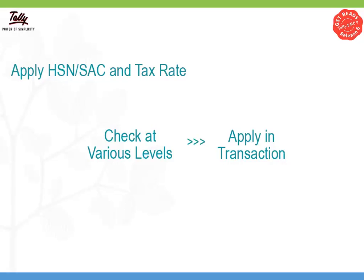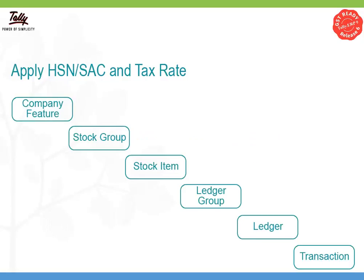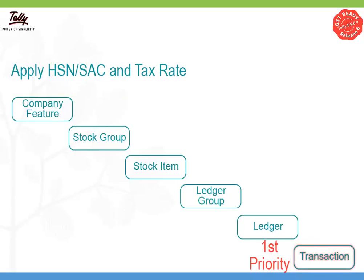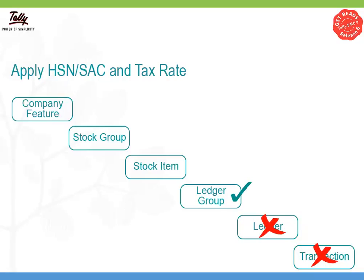Tally ERP 9 will check for the tax rate and HSN, SAC details in an order starting from lowest level to the highest. Hence, the rate given during transaction will get the highest priority. If there is no rate at transaction level, Tally ERP 9 will check the next level and apply details specified in sales and purchase ledgers if available. If not found, it will check in ledger groups and apply the details specified here. If not found, it will check the stock item master and then stock group and finally the company level.